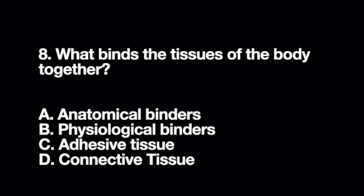What binds the tissues of the body together? A. Anatomical binders B. Physiological binders C. Adhesive tissue D. Connective tissue